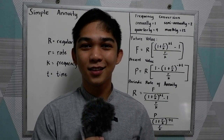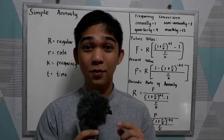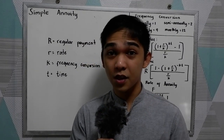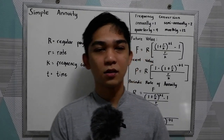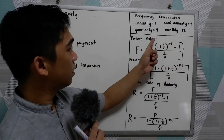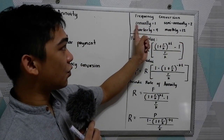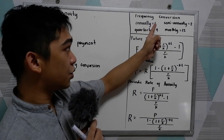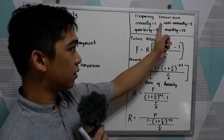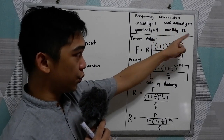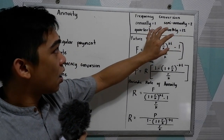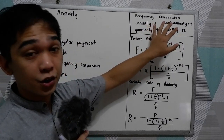Good day everyone. Today we will be discussing the simple annuity. These are the terms you are going to encounter. We have the frequency conversion: annually is 1, quarterly is 4, semi-annually is 2, and monthly is equal to 12. Those are our frequency conversions.